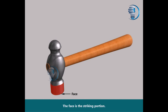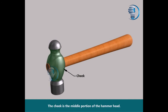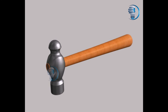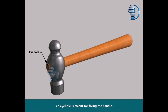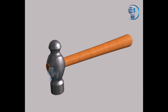The face is the striking portion. The pin is the other end of the head. The cheek is the middle portion of the hammer head. An eye hole is meant for fixing the handle. The wedges fix the handle in the eye hole.